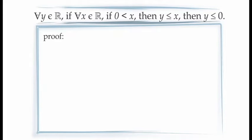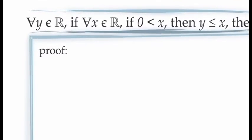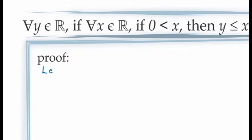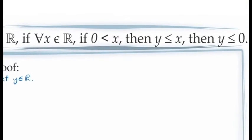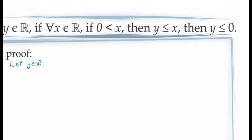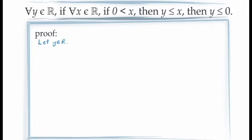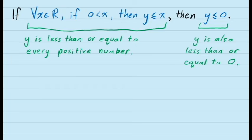Trusting in our principles of logic, we can notice that the statement begins with a universal quantifier — for all values of y in the real numbers — which means we need to introduce an arbitrary constant y into our proof. Next, we see that the statement we need to demonstrate for this value of y is a conditional statement with a fairly complicated antecedent. This means we can use either a direct proof, a proof by contraposition, or a proof by contradiction. Let's have a look at what a proof by contraposition would look like.